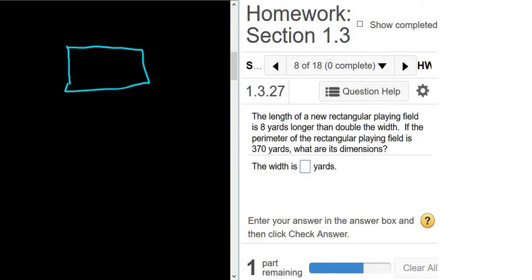And so we know it's 8 yards longer than double the width. So if we call the width x, you can also call it w. The length is 8 yards longer than double the width. So it should be 8 plus double the width. So 8 yards longer than double the width. So 2x is double the width.